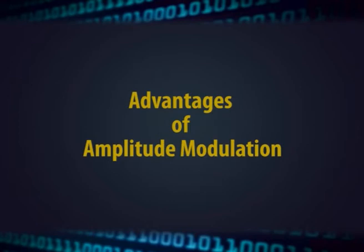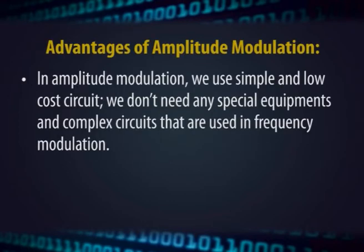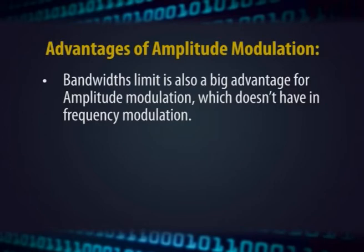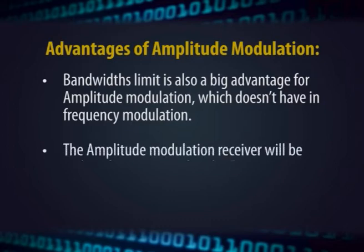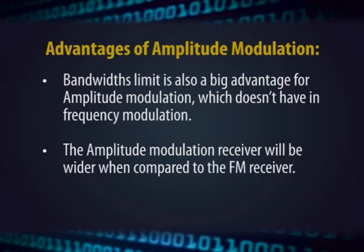Advantages of amplitude modulation: AM uses simple and low-cost circuits — no special equipment or complex circuits like those used in frequency modulation are needed. Because of AM's longer wavelength, AM signals can propagate longer distances. Bandwidth limit is also an advantage. The AM receiver has a wider coverage compared to the FM receiver, and atmospheric propagation is good for amplitude modulated signals.